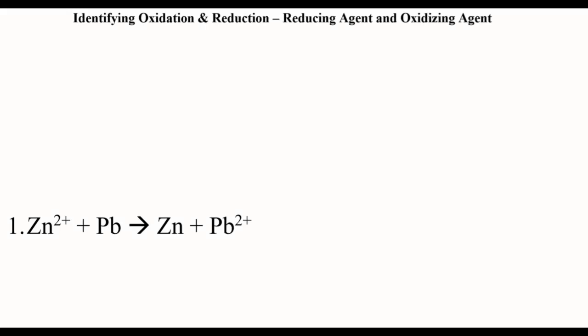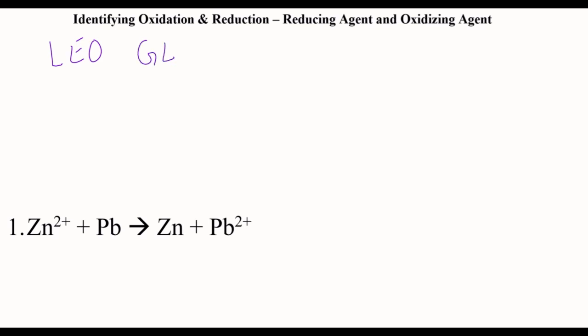This video is on identifying oxidation and reduction occurring in a reaction, as well as the reducing agent and oxidizing agent. It's really important to remember: Leo the lion says grr. That is going to be critical to this lesson today. Losing electrons is oxidation, and gaining electrons is reduction.